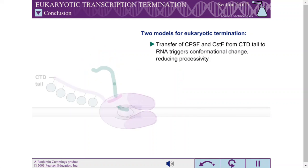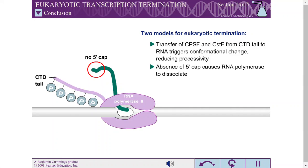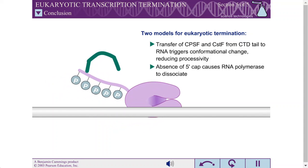The second model for eukaryotic termination states that it is possible that the absence of a 5' cap on the second RNA molecule is sensed by the RNA polymerase, causing the polymerase to dissociate.